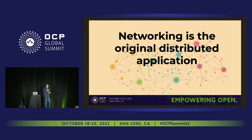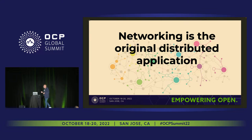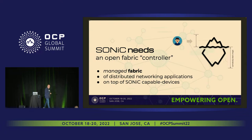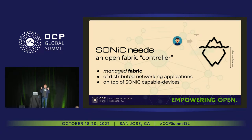Let's start with an observation. Networking was one of the original distributed applications. It was distributed applications before distributed applications were really a thing. But for some reason, we've been managing them and treating networks as if we're just collections of devices. We never treated them as applications. As we're evolving in the way we're dealing with infrastructure in general, I believe that there needs to be an open way of treating the collections of devices that form a network as a distributed networking application.